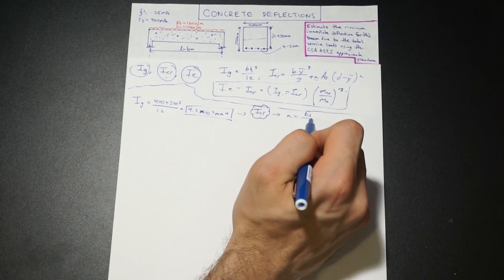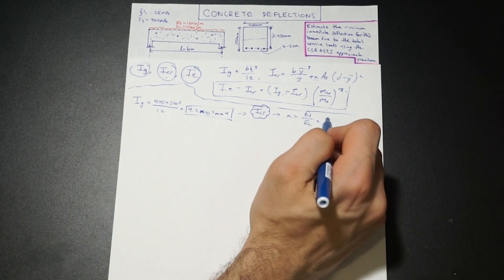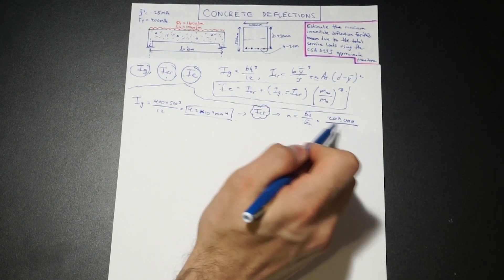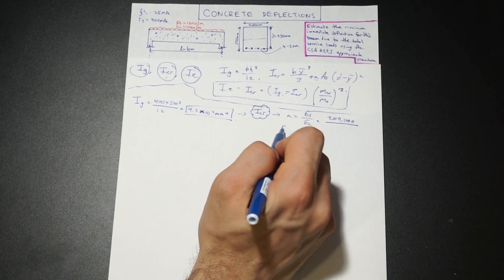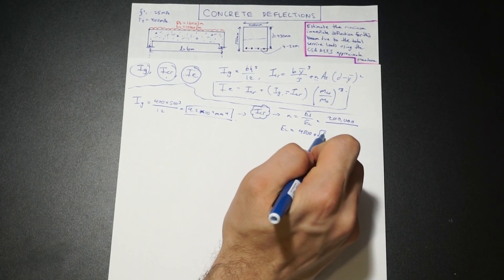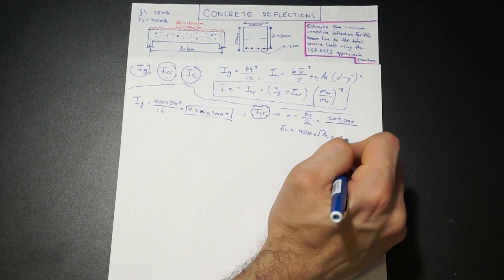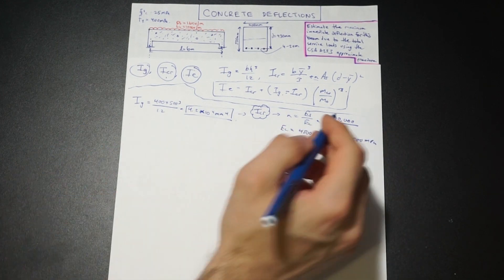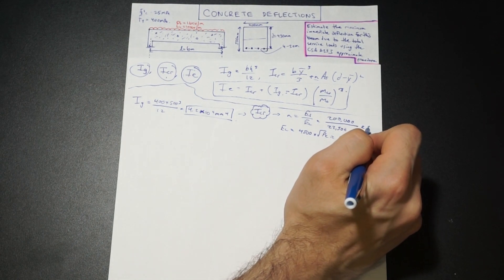N is ES over EC. ES we know is 200,000 MPa. EC we can approximate using 4,500 times the square root of F prime C. We have F prime C equal to 25, so EC is 22,500 MPa. That gives us a value of 8.89, which we'll round to 9.